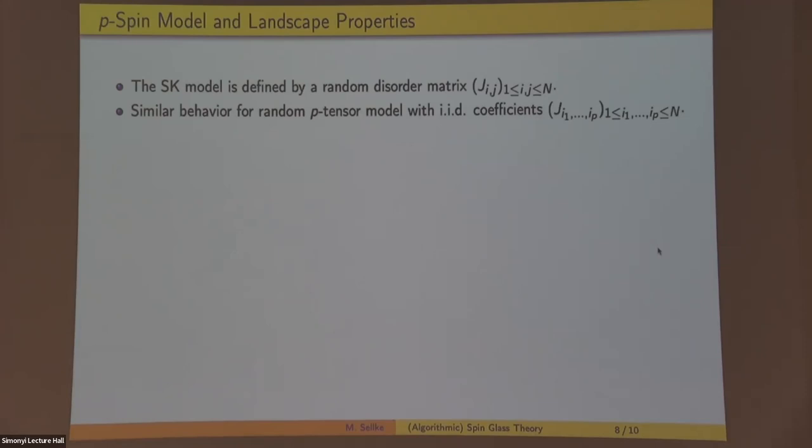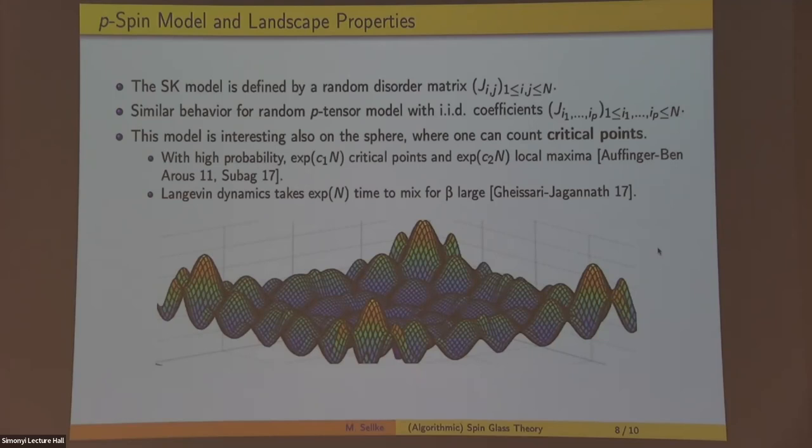Another very interesting phenomena here can be seen by looking at the landscape. So in the model I've described, the Sherrington-Kirkpatrick model, we have a random disorder matrix. But we could just as well define a p-tensor analog with n to the p random coefficients. We'll have a degree p polynomial. And this is also interesting on the sphere. So if we had a random quadratic on the sphere, we'd just be looking at the eigenvalues. And while that's interesting, it's not what we want to be doing. But if we look at a random cubic on the sphere, it's going to be very complicated. And one can show that it has things like exponentially many critical points, exponentially many local optima, and exponentially large mixing times at low temperature.